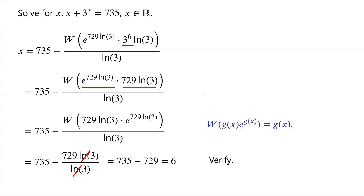It is easy to verify that when x equals 6, the left-hand side of the equation is equal to 6 plus 3 to the power of 6, which is equal to 6 plus 729, which is equal to 735, which equals the right-hand side of the equation. So x equals 6 is the only solution of the original equation.